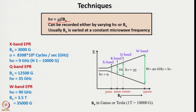In EPR spectroscopy, the energy difference between the two states is given by hν = G·β·B₀. This can be recorded either by varying the microwave frequency hν or B₀; usually B₀ is varied at a constant microwave frequency. For X-band EPR, the typical magnetic field strength is 3000 gauss and ν is approximately 9 gigahertz. For Q-band, the field is 12500 gauss and hν equals 35 gigahertz. For W-band EPR, ν equals 90 gigahertz and B₀ equals 3.5 tesla or 35000 gauss.